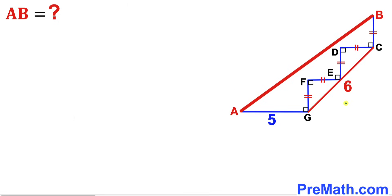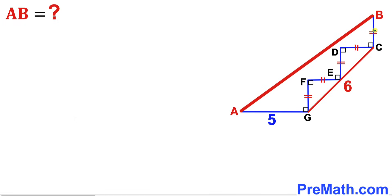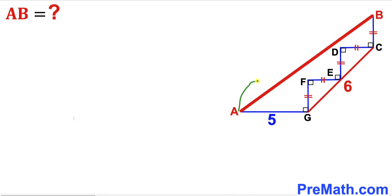Welcome to pre-math. In this video we have got a staircase problem. As you can see in the given diagram, segment AG is 5 units whereas segment CG is 6 units. The perpendicular and horizontal segments are equal in length, all angles are 90 degrees each, and our task is to calculate the length AB.